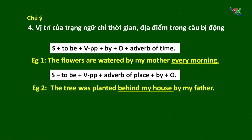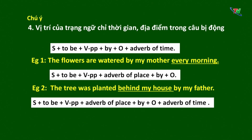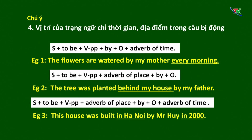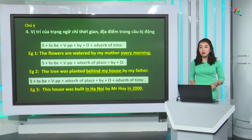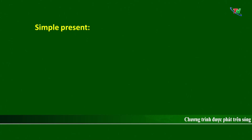Nếu như trong câu vừa có trạng ngữ chỉ thời gian, vừa có trạng ngữ chỉ địa điểm, thì công thức: Chủ ngữ + to be + quá khứ phân từ + trạng ngữ chỉ địa điểm + by + tân ngữ + trạng ngữ chỉ thời gian. Ví dụ: 'This house was built in Hà Nội by Mr. Huy in 2000.' Ở đây 'in Hà Nội' là trạng ngữ chỉ địa điểm, đứng trước by + tân ngữ. Còn 'in 2000' là trạng ngữ chỉ thời gian, đứng sau by + tân ngữ. Như vậy chúng ta vừa tìm hiểu một số kiến thức cơ bản về bị động.